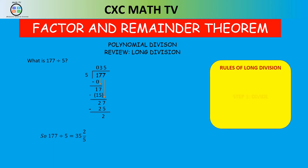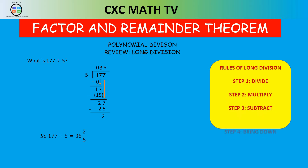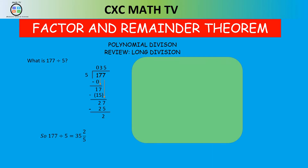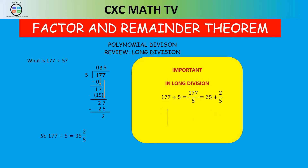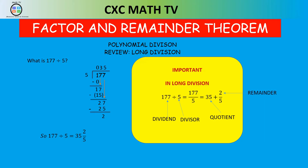Now the rules of long division are: we divide, multiply, take away, and then bring down. We call the 177 the dividend. We call the 5 the divisor. And most importantly, we call that number 2 the remainder. So when 177 is divided by 5, it leaves a remainder of 2.